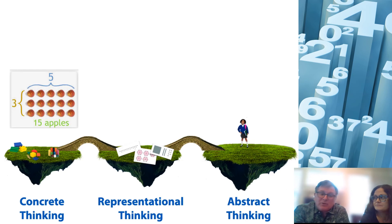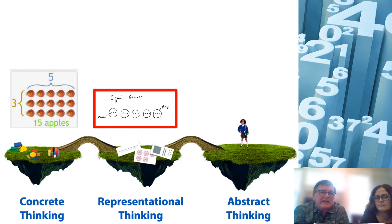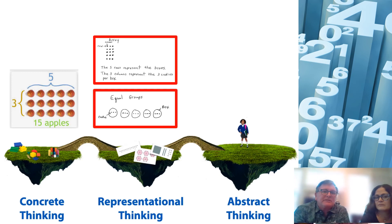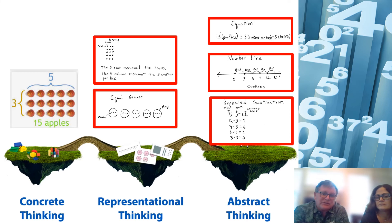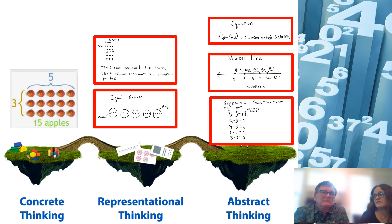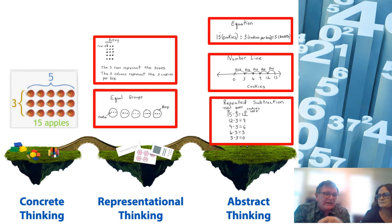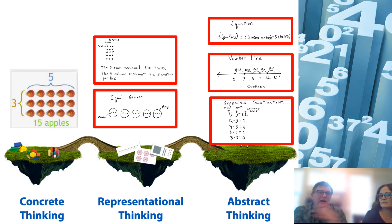Thinking about the CRA process — concrete, representational, abstract — you see all different kinds of tools. There's an example of an equal groups representation, an array with labeling and text, and repeated subtraction for abstract number lines and equations, again with labels. Emily asks: Is our end goal to always get to the abstract? If a student is struggling with division even though they're fine with multiplication abstractly, is it okay to move back to concrete? Yes — these stages are fluid. That bridge building means you can go back and forth. You may have to return to the concrete for division specifically.